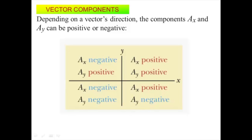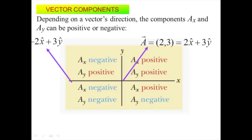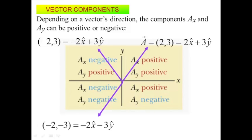If I give you numbers in component format, you should be able to sketch where the vector is. Two, three will be somewhere in the first quadrant. Negative two, three goes in the second quadrant. Negative two, negative three goes down into the third quadrant. Two, negative three goes into the fourth. When you see the numbers, pay attention to the signs, so if you're asked to draw a picture, draw the arrow in at least the right general direction.